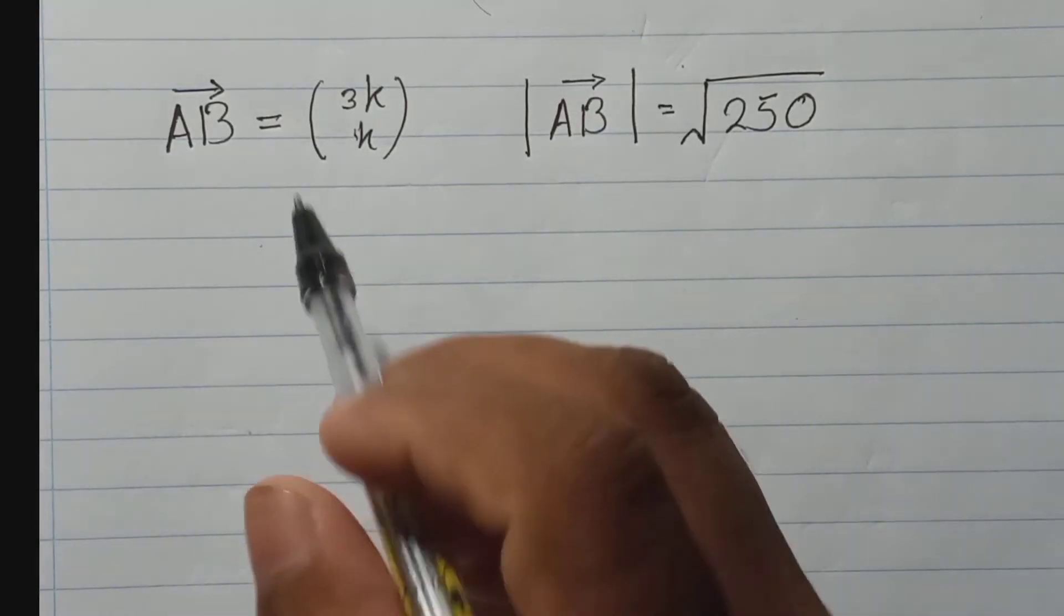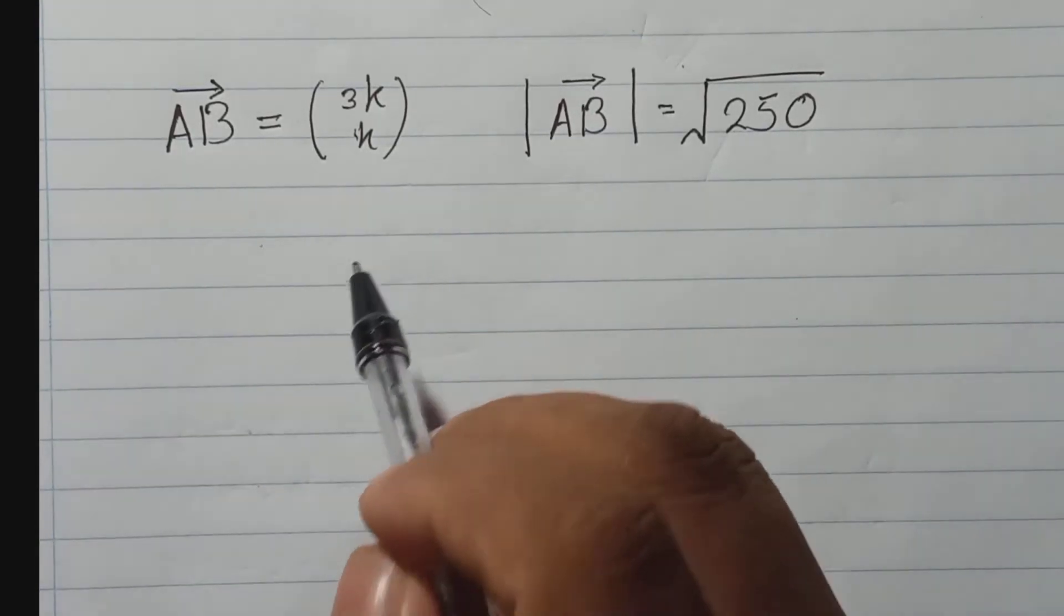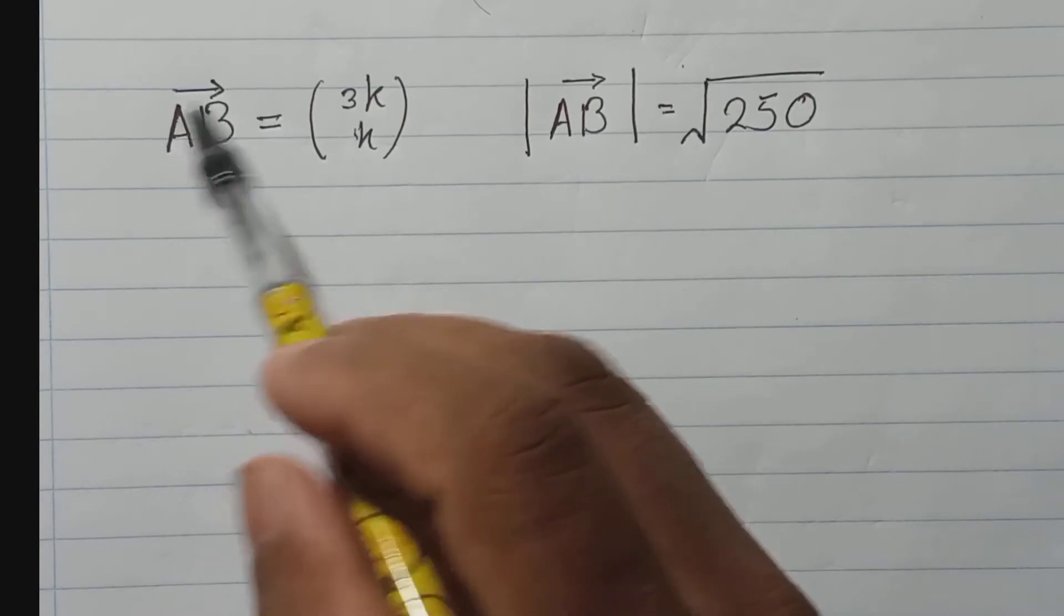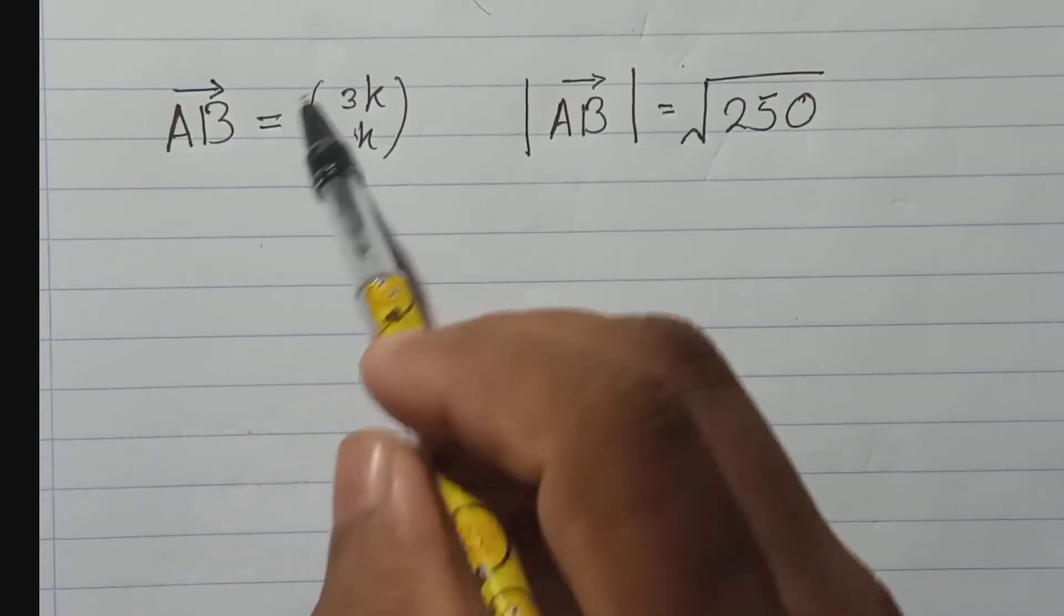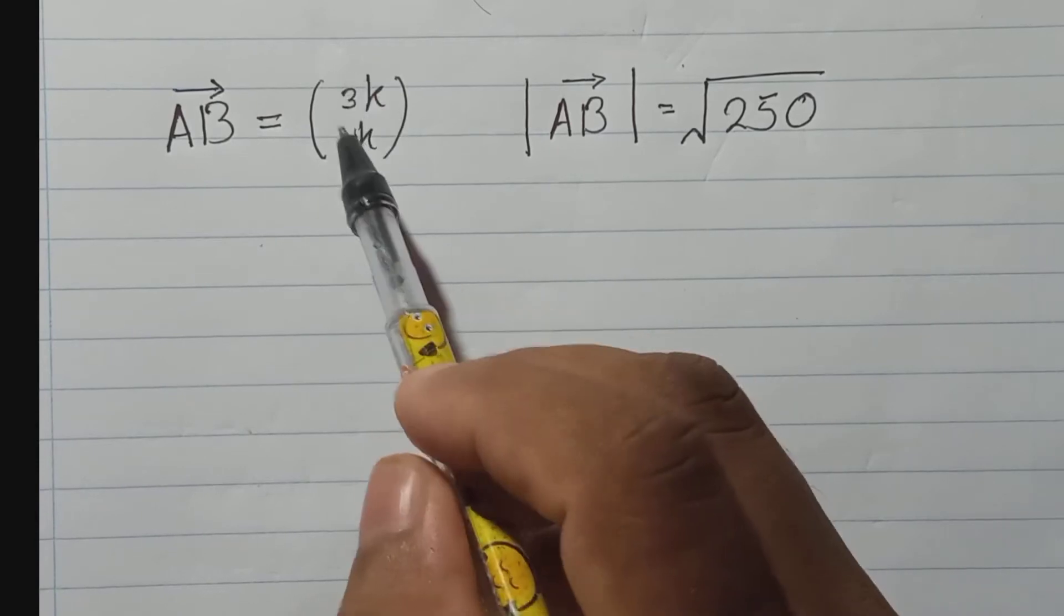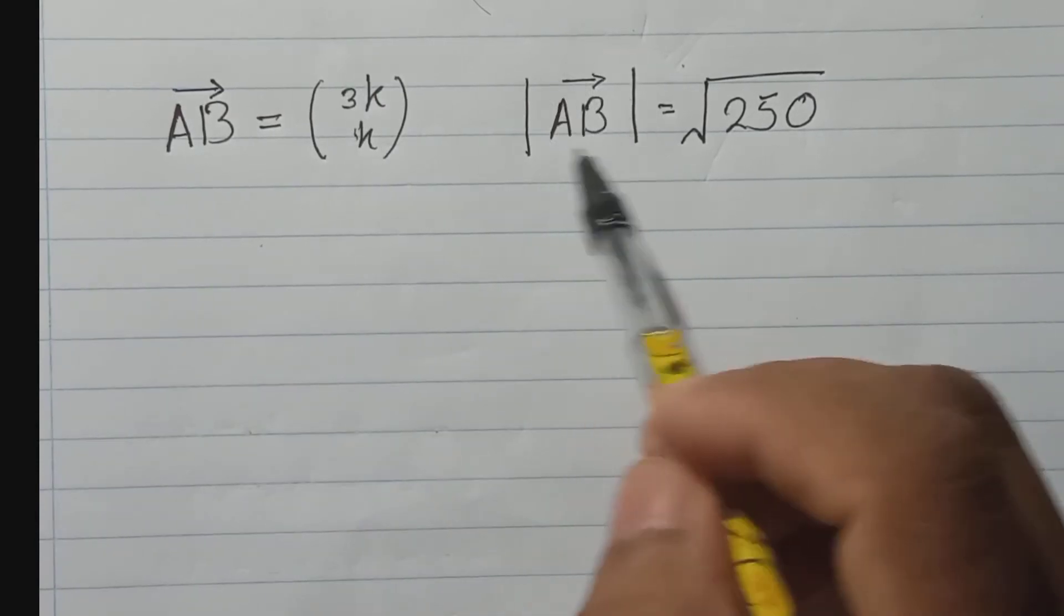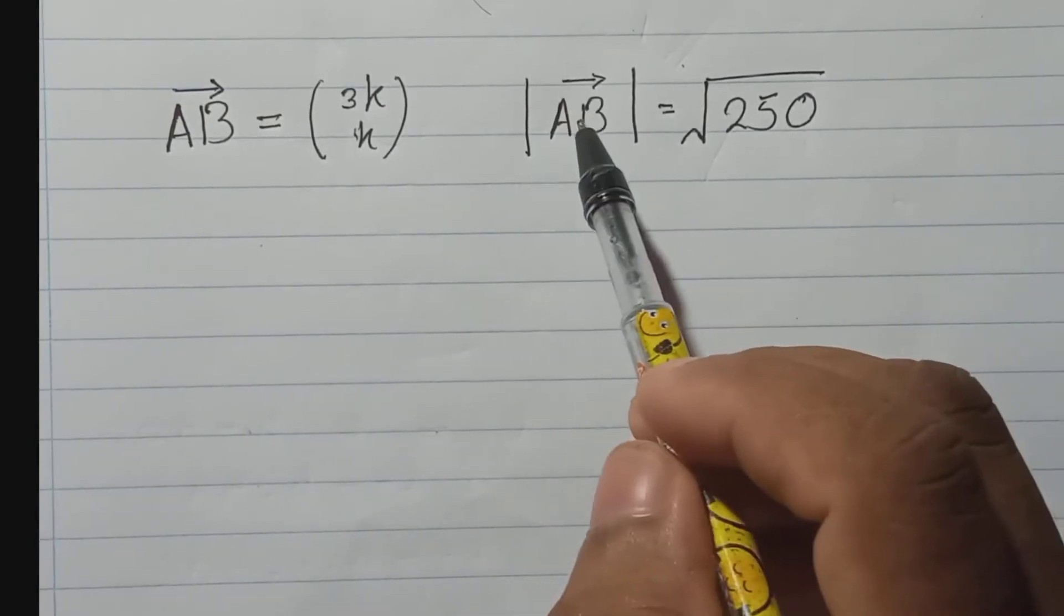Okay, now here you need to find value of k. This is the vector, they given as a column vector like this, and then they tell here for the magnitude of this vector square root of 250.